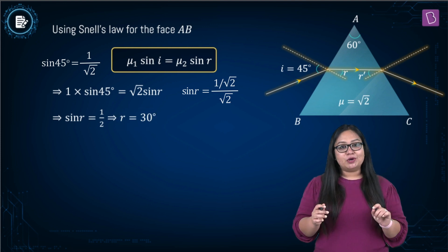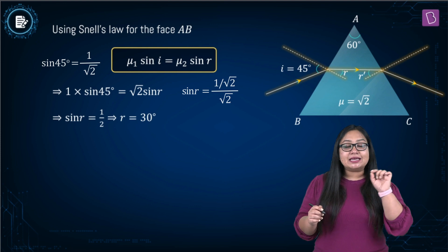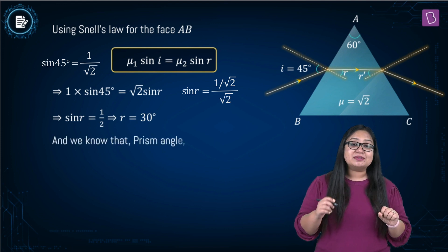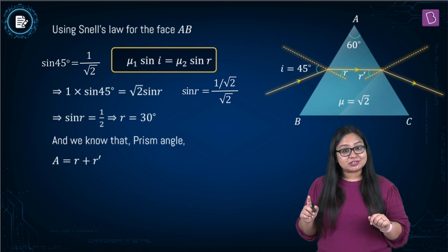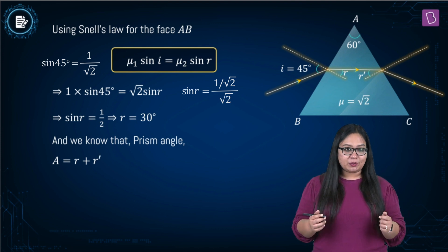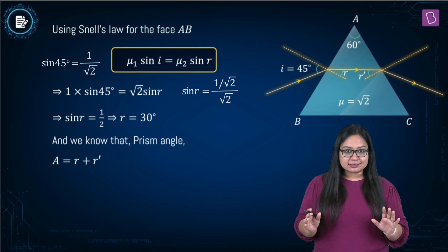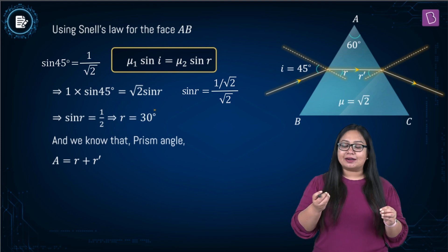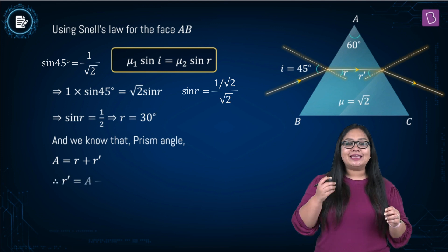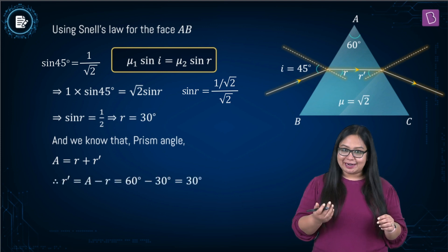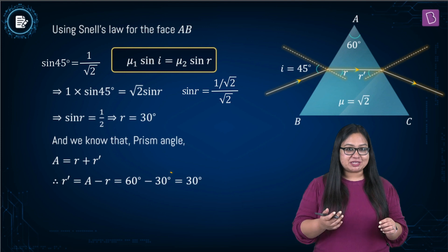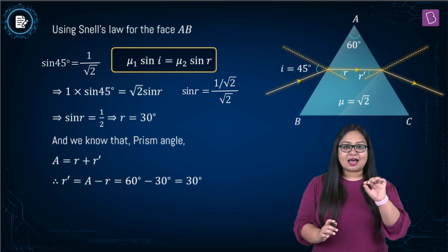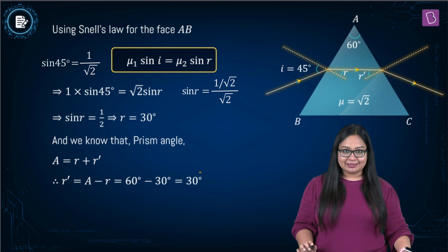Now to calculate R', let's use the relation: angle of prism A is equal to R plus R'. Here the angle of prism is 60 degrees and R is 30 degrees, so R' will be A minus R, which is equal to 60 minus 30 degrees. That gives us R' as 30 degrees.